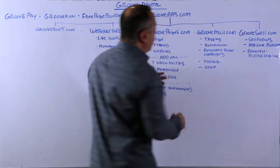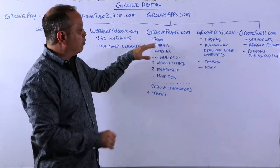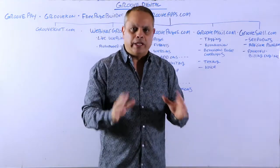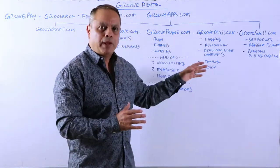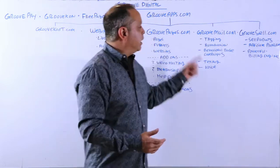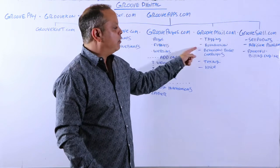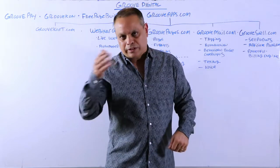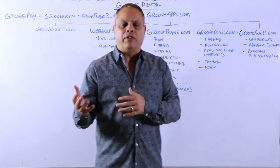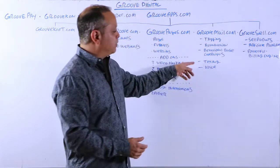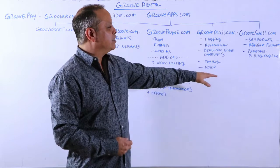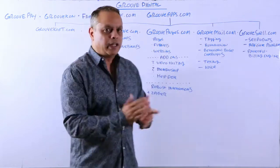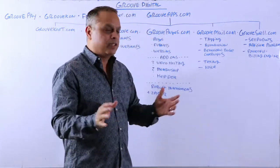We're also doing GrooveMail.com. This will be the leading platform on the internet to do all of your email marketing and autoresponders, but it also does tagging, which allows you to do powerful automation and behavioral-based campaigns — basically, if they've seen this page, send them this email; if they haven't, send this email; or if they've seen this part of the video, send this email. We'll also be doing text messaging and voice. This is about 70% done. Pricing will be somewhere around $99, $199, $299 a month.